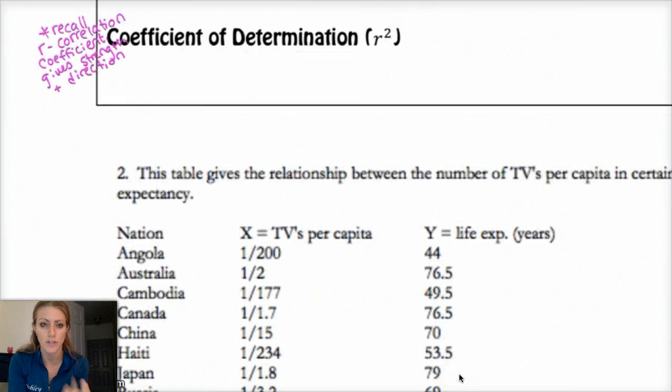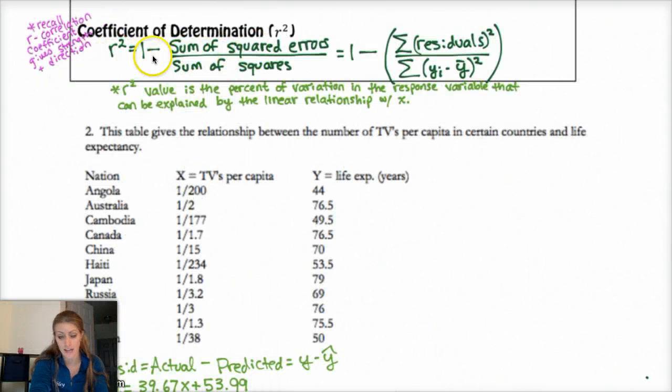Okay, last thing is the coefficient of determination, which is r squared. Recall that r, which is the correlation coefficient, gives you strength and direction of a set of data, the correlation between the two sets of data, the two variables. The coefficient of determination is just that number r but squared. And it actually gives you a little more information than, well, just different information. Okay, so this is how r squared's calculated. It's just one minus the sum of the squared errors over the sum of the squares, which is one minus the sum of the residual squared divided by each individual y value minus the mean squared.